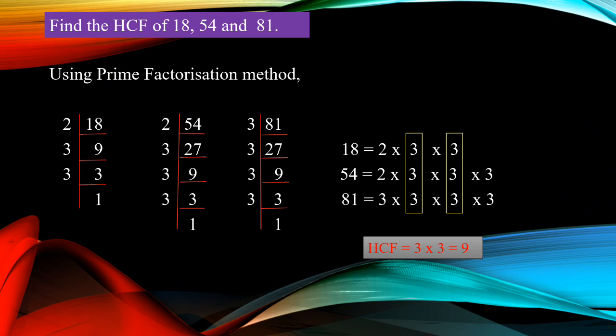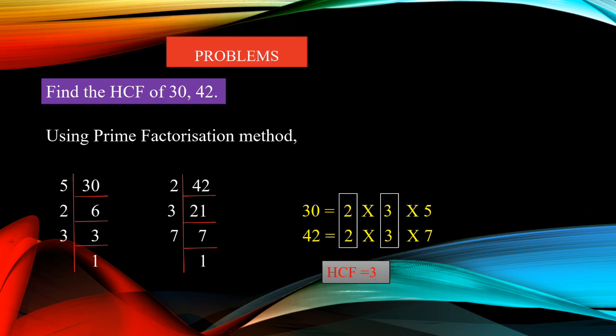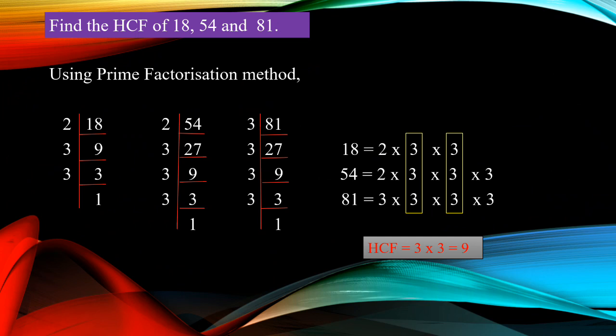Now writing the factors: 18 = 2×3×3×3, 54 = 2×3×3×3, 81 = 3×3×3×3. Here, 3 is common among all three numbers, and one more 3 is common for both 18, 54, and 81. 18 and 54 also have 2, but not 81, so we leave that. Common for all three: 3×3. So HCF = 3×3 = 9. 9 is the highest common factor of 18, 54, and 81.